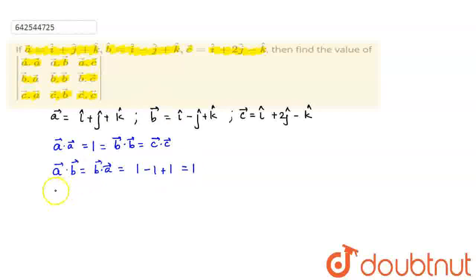Now A dot C vector, which is equal to C dot A vector. You may not be using it because we will get a positive answer altogether since it's in the modulus. We have to take out the magnitude. So A dot C would be 1 plus 2 minus 1, so it would be positive 2. Now B dot C is equal to C dot B would be 1 minus 2 minus 1. It would be equal to minus 2.